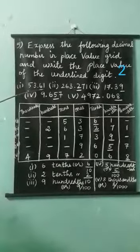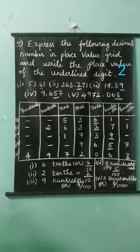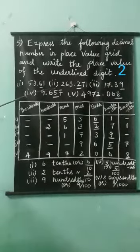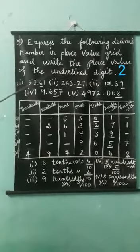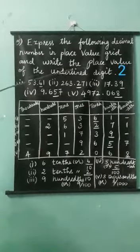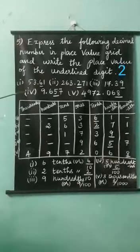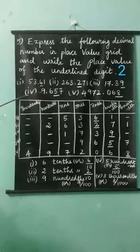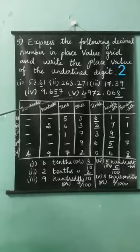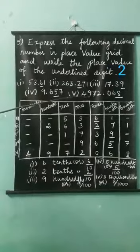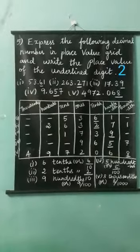See the underlined digit. First one: 53.61. Second one: 263.271. Third one: 17.39. Fourth one: 9.657. Fifth one: 4972.068.